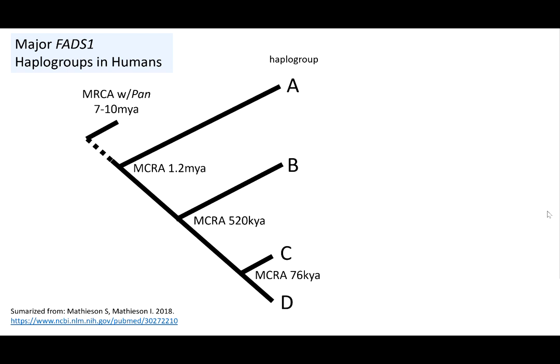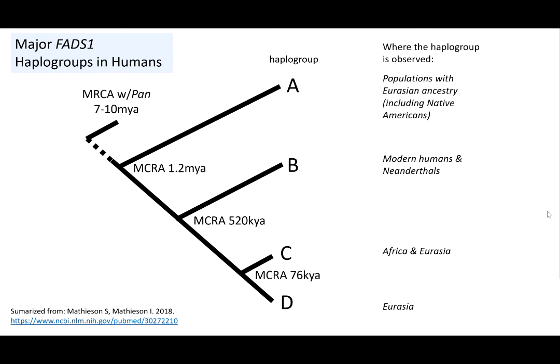In most of Eurasia, essentially all of Africa, and in Neanderthals, people have — or had — a FADS-1 allele that accelerated the synthesis of long-chain PUFAs from short-chain PUFAs. It turns out that even the most recent major haplogroup didn't actually correspond with the advent of agriculture. So it doesn't actually look like long-chain fatty acid synthesis and agriculture are an example of gene-culture co-evolution. That doesn't seem to be the case. But that said, there is evidence of selection on FADS-1 variation.